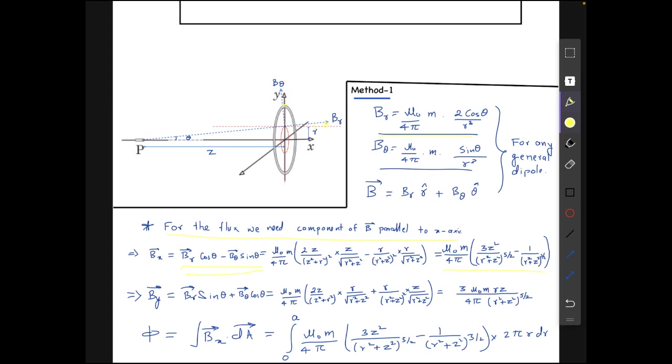Similarly we can find the B y to be this. But notice that B y is actually only in y direction for only this point. At all other points it will be radially outwards like this. So it is not necessarily in the y direction, it is only for this point.